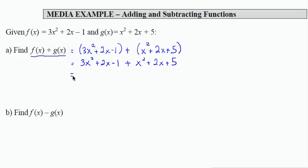My next step is going to be to combine like terms. So I have 3x squared plus x squared, remember there's a 1 in front, coefficient, that's 4x squared, 2x plus 2x, that's plus 4x, and then a negative 1 or minus 1 plus 5 is going to give me a plus 4, and this is my final result then for f of x plus g of x.